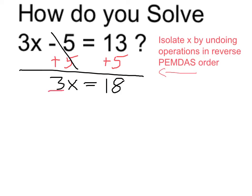Now I undo the multiplication by 3 by dividing by 3. If I do it on one side I need to do it on both. That x is 18 divided by 3 which is 6.